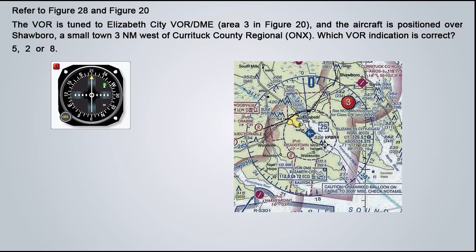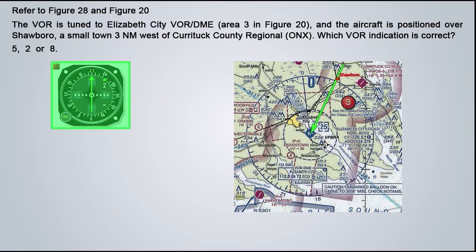We look at the flag of VOR number 5, which points straight up, and the needle, which is centered. So the number to fly directly to the station is found straight up from the middle of the instrument — in this case, 210. This means that to head directly to Elizabeth City VOR, we would need to fly a heading of 210, a south-south-westerly heading. Drawing that heading on the chart, Showboro is right smack on that line, which confirms that VOR number 5 is indeed our correct VOR.